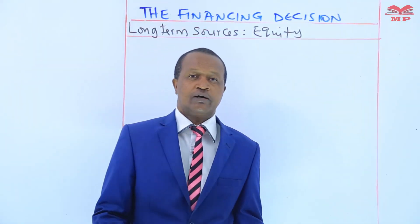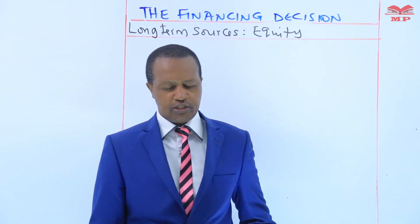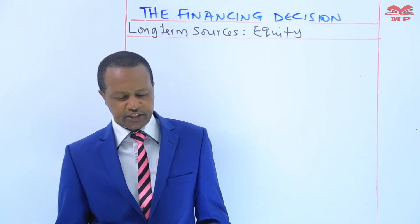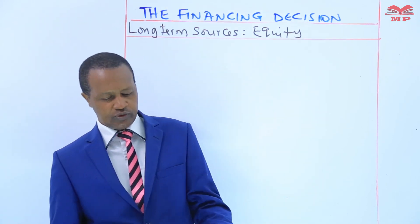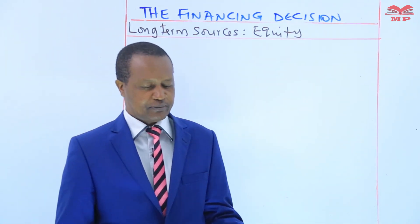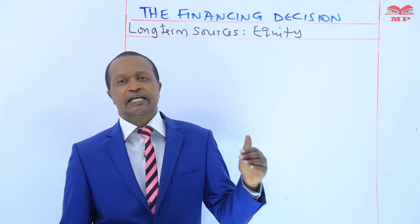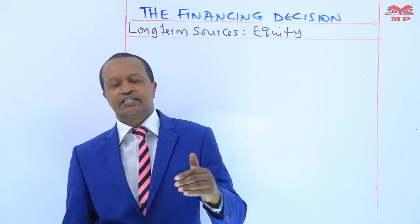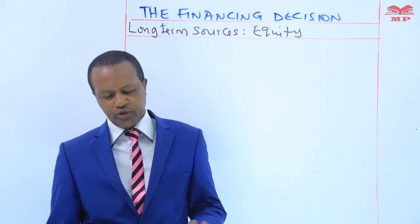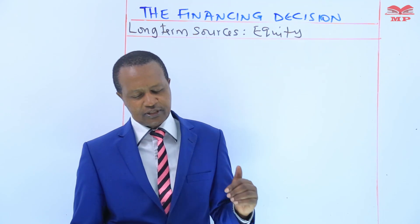Hello and welcome back to the lesson. Today we are still on the third bullet of the chapter — the financing decision, which is sources of finances for enterprises. During our last lesson we made a distinction between internally generated funds and externally generated funds. Today we begin on another segment under the same subtopic.